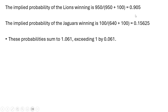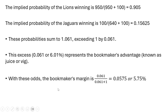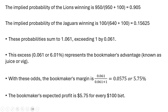You'll notice that if we were to sum these two probabilities, they exceed one — they exceed one by 0.061. This excess represents the bookmaker's advantage, sometimes known as the juice or vig. With these odds, the bookmaker's margin is calculated by taking this 0.061 and plugging it in, and we get 5.75%. The bookmaker's expected profit then is $5.75 for every $100 bet.